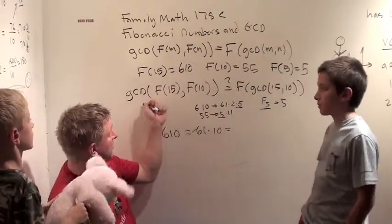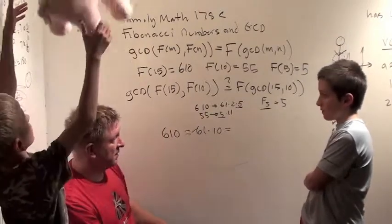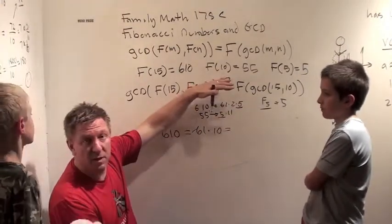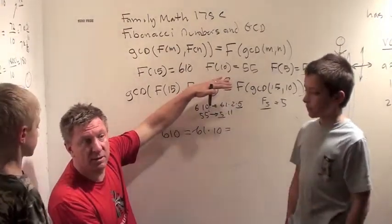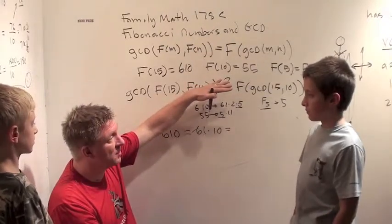So, the greatest common divisor of Fibonacci 15 and Fibonacci 10 is? 5. Just like we thought. So, this formula that Dave wrote down on Twitter seems to be true.